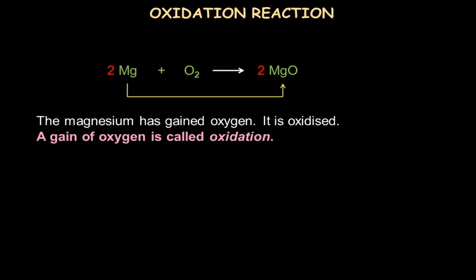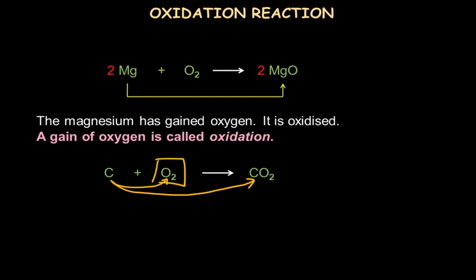Let's see one more example. Here carbon is reacting with oxygen to form carbon dioxide. So again, carbon has gained oxygen to become carbon dioxide. Gaining of oxygen has occurred, and such a reaction is again called an oxidation reaction.